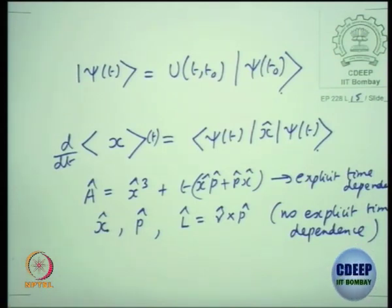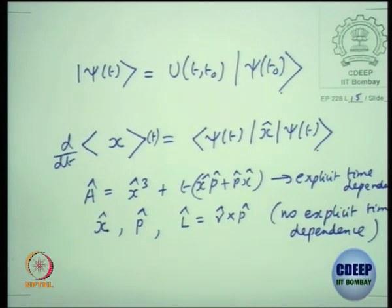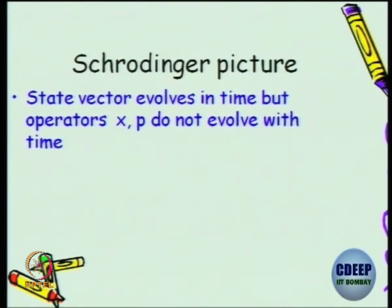When I say x, x does not have explicit time dependence — nor does p, nor angular momentum L which is r cross p — no explicit time dependence. But because the state vectors are evolving in time, you could have to take the time derivative of the expectation value of x, which in principle could be a function of time. Those are the kinds of things we do in the Schrödinger picture. The time dependence is put on the state. The operator is independent of time, but state vectors x and p evolve, and the operators x and p do not evolve with time as operators.